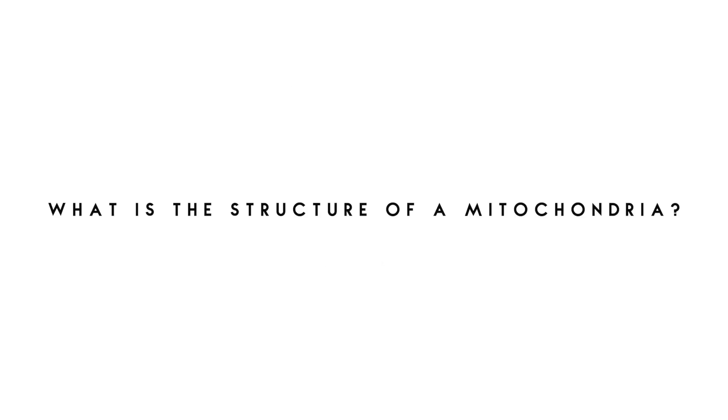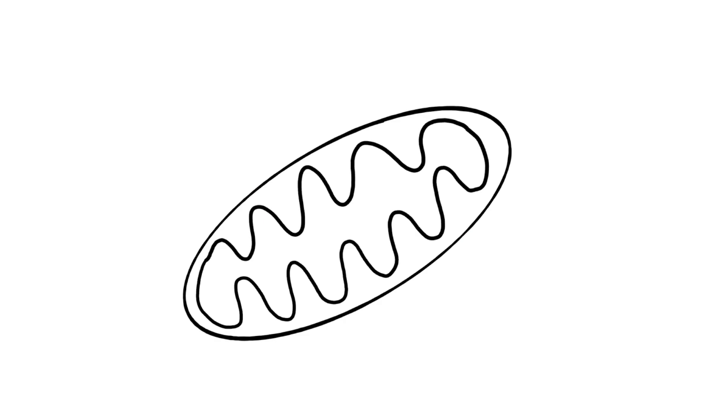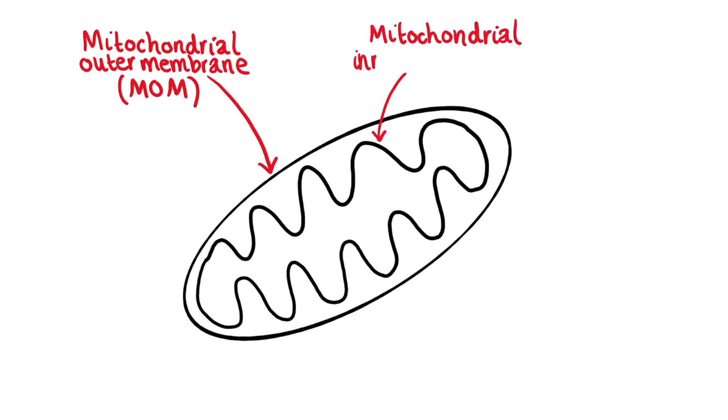Moving on to look at the mitochondria then we're going to ask what is the structure of this organelle. This is a diagram of a mitochondrion, a single one of these organelles. We're going to start from the outside and work our way inwards. We have the mitochondrial outer membrane at the very outer edge and you can remember this as MOM and then just inside that we have the mitochondrial inner membrane.